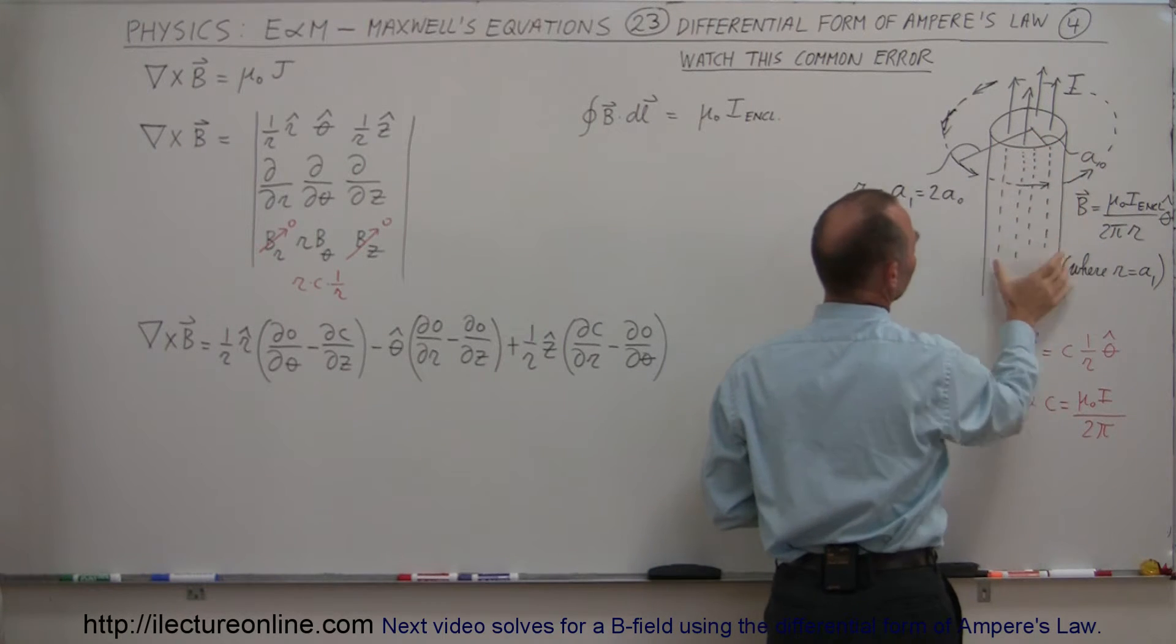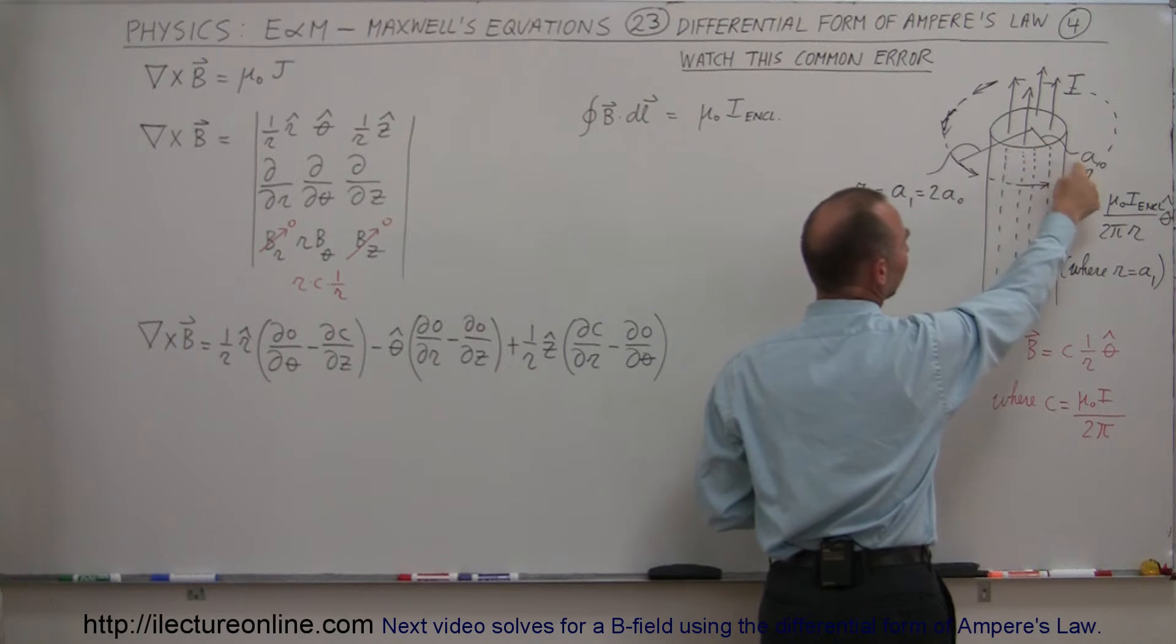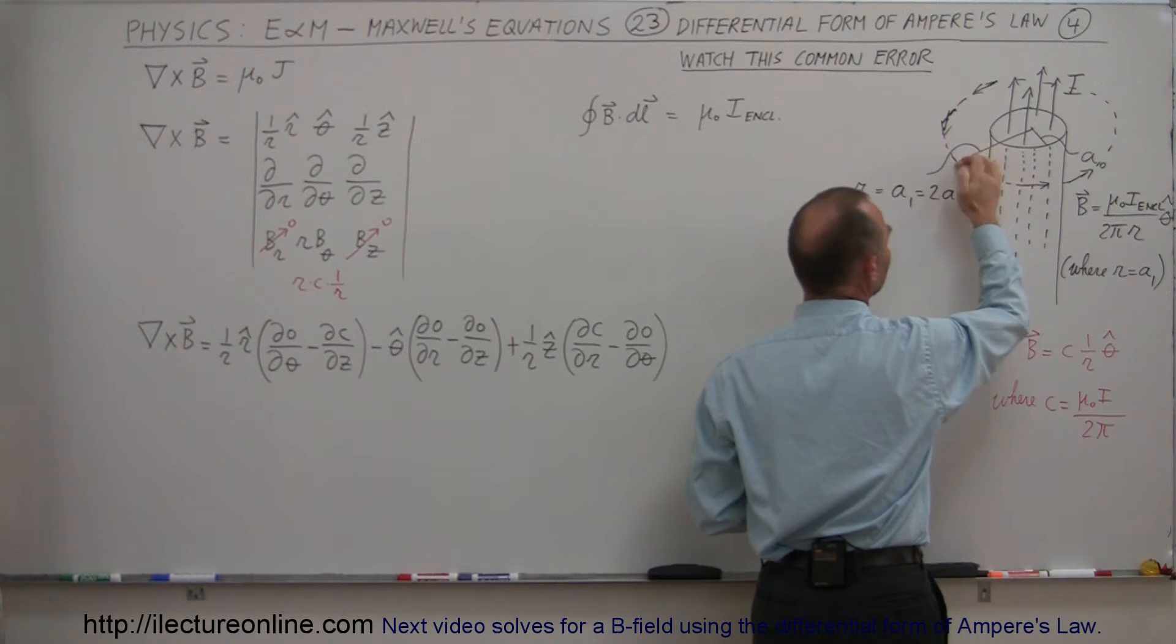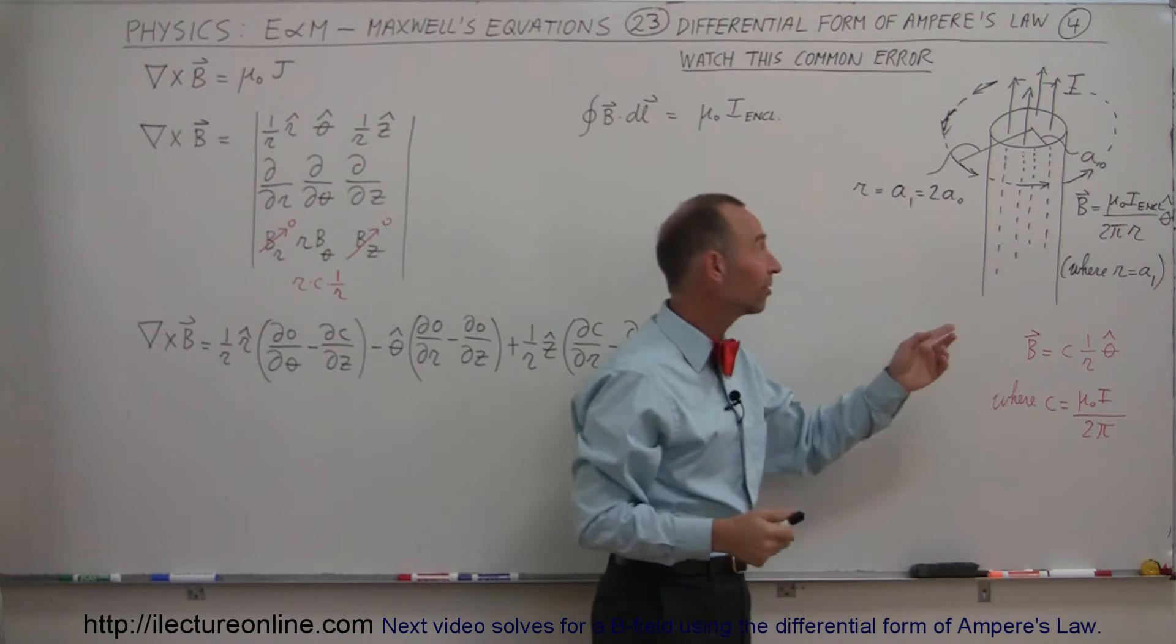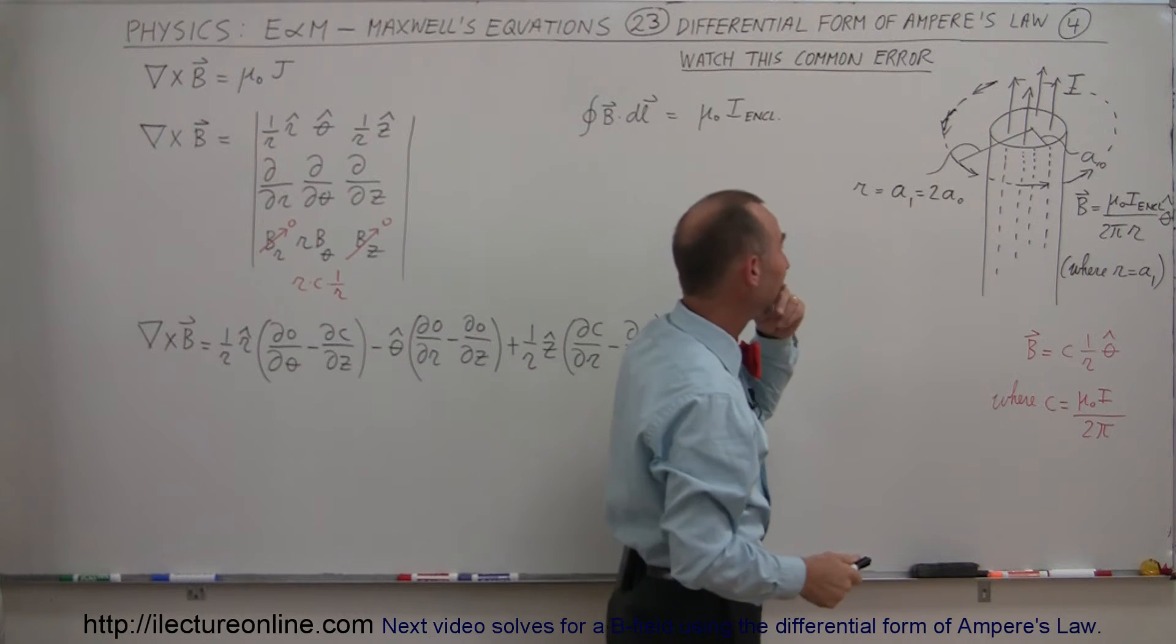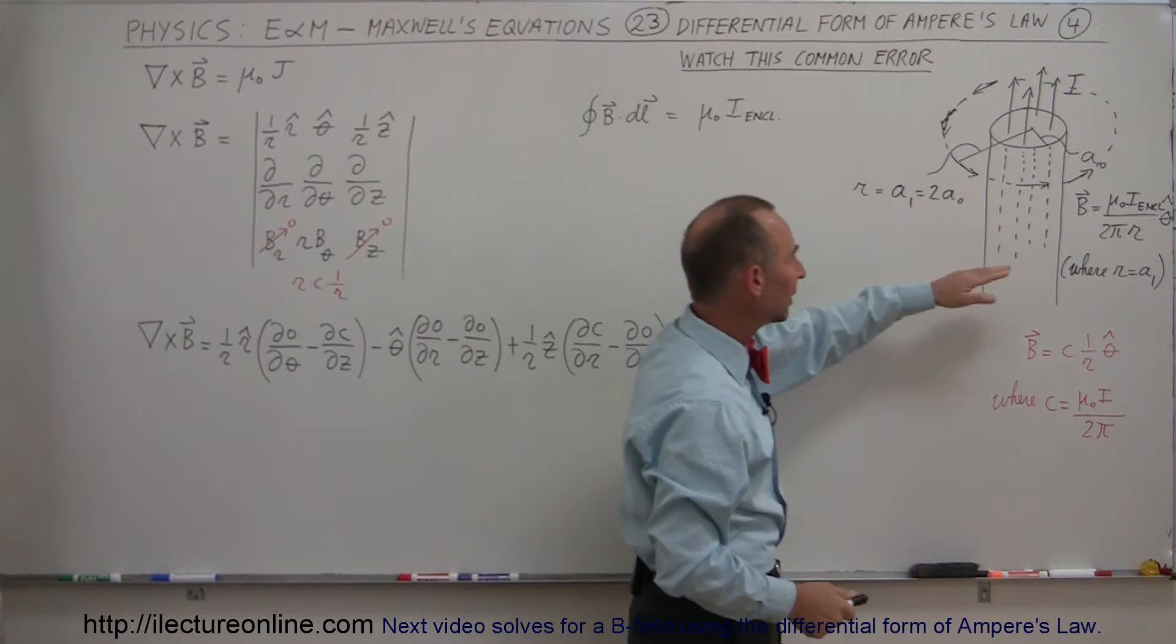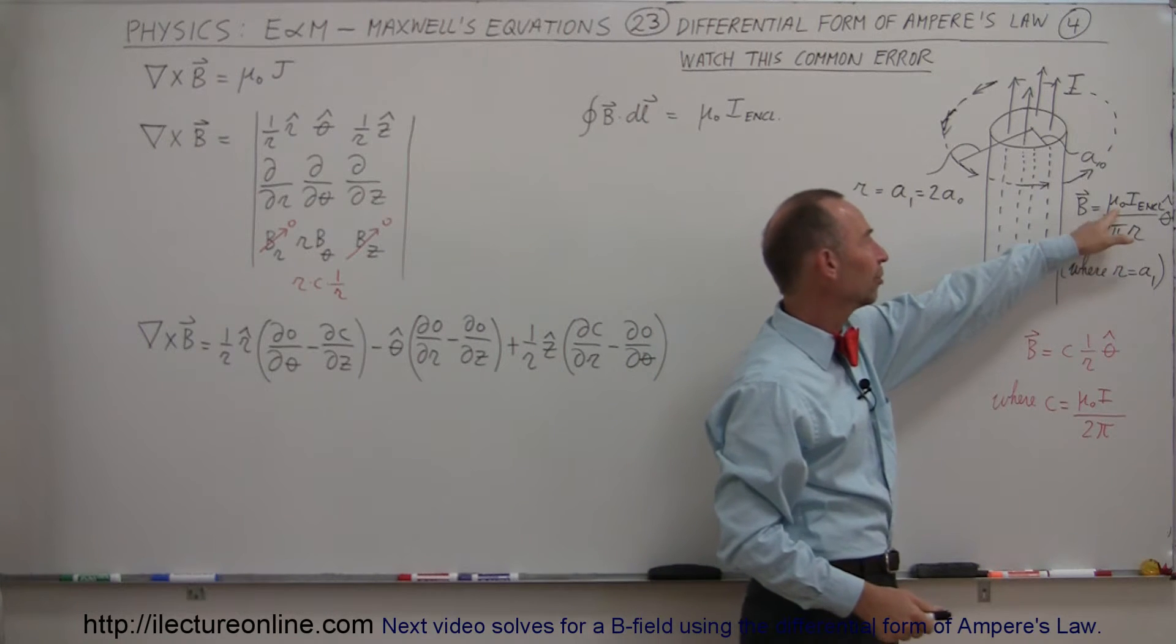Let's say we want to find the B field, or the magnetic field strength, at a distance r away from this region right here. So if the region itself where the current is flowing has a radius of a₀, and I want to find the B field at an area, let's say a₁, which is twice the distance from a₀, and I'll call that r...